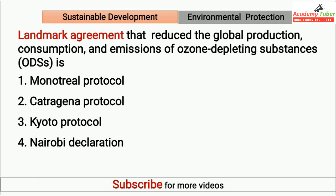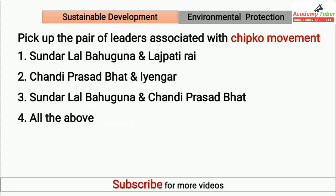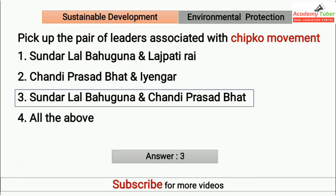Landmark agreement that reduced the global production, consumption and emissions of ozone depleting substances is? Answer is Montreal Protocol. Pick the pair of leaders associated with the Chipko movement. Answer is Sundarlal Bahuguna and Chandi Prasad Bhatt.